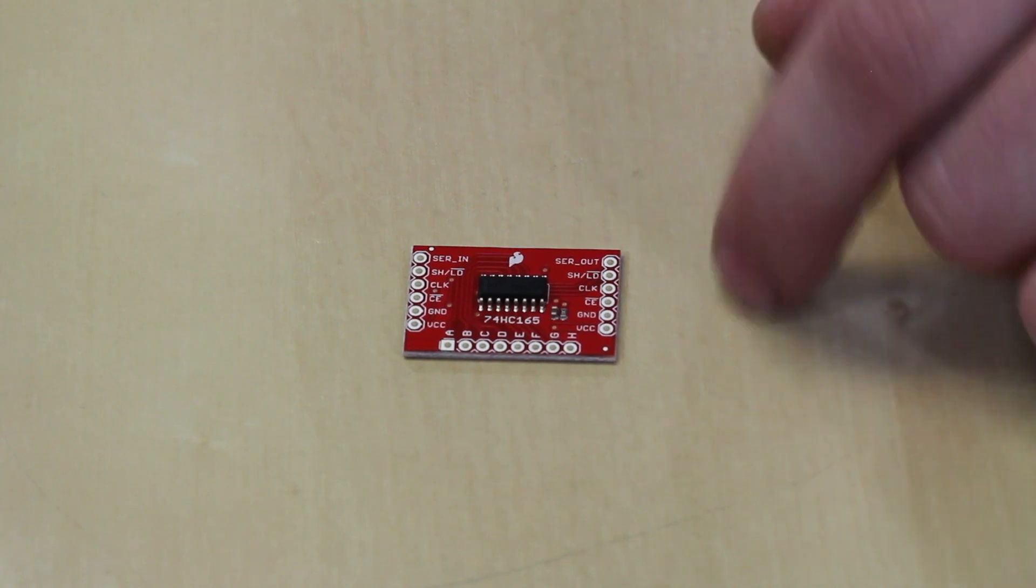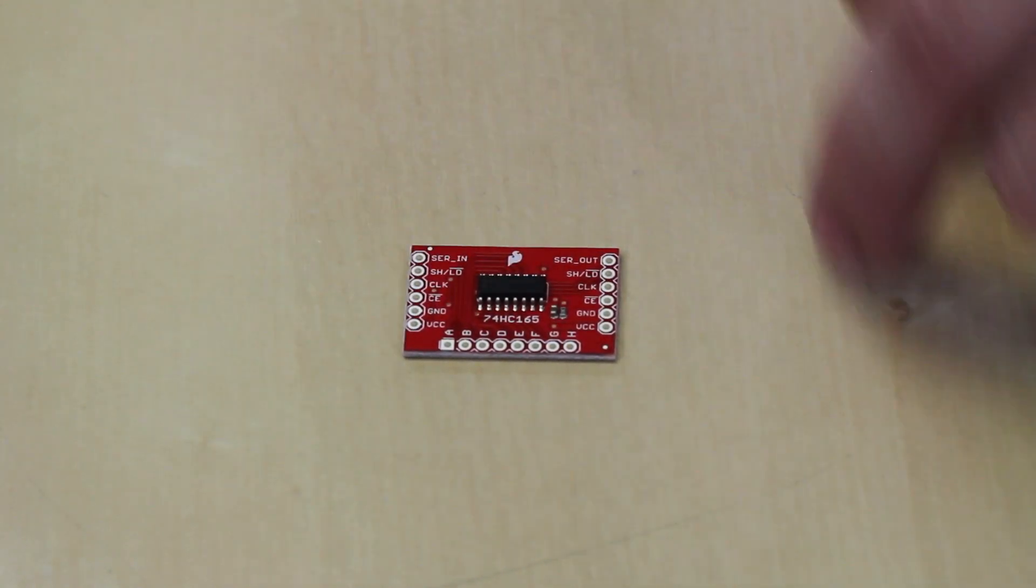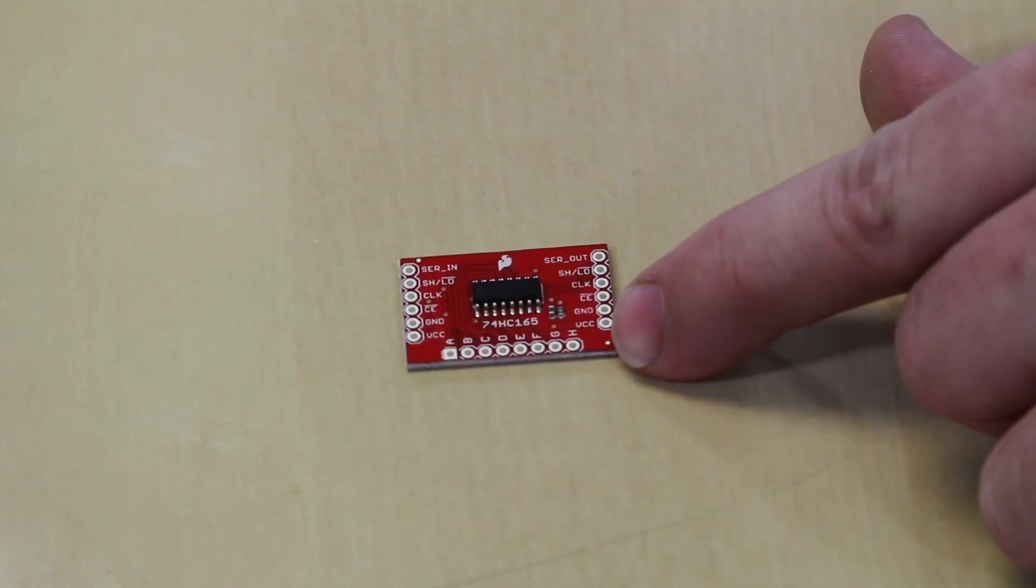So here's an example of a shift register. You actually talk to the shift register using these pins here, and you can control the outputs of these pins along the front edge here. There are eight on this shift register board,